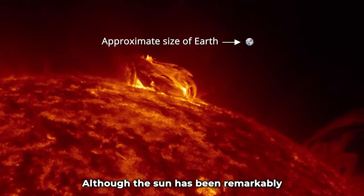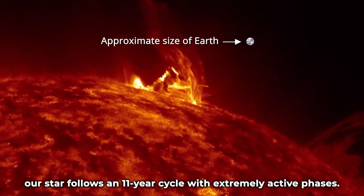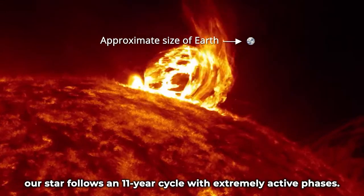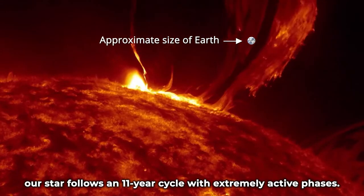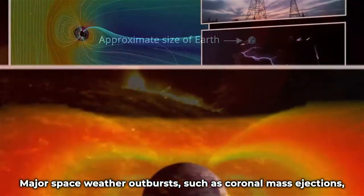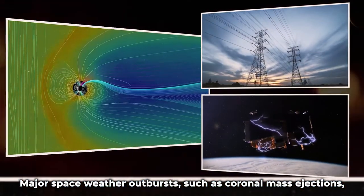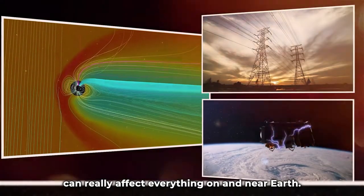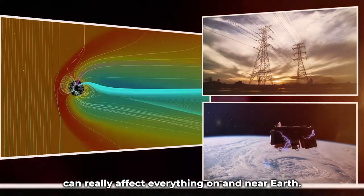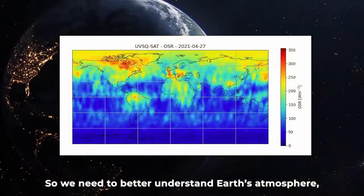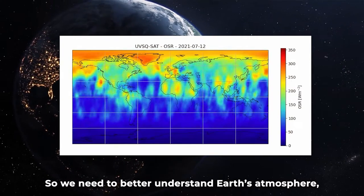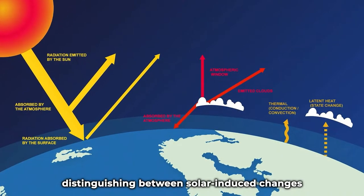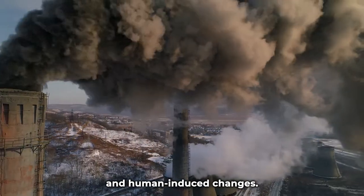Although the Sun has been remarkably quiet in the past decade, our star follows an 11-year cycle with extremely active phases. Major space weather outbursts such as coronal mass ejections can really affect everything on and near Earth. So we need to better understand Earth's atmosphere, distinguishing between solar-induced changes and human-induced changes.